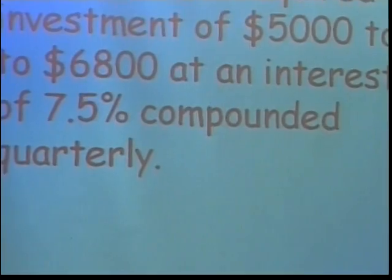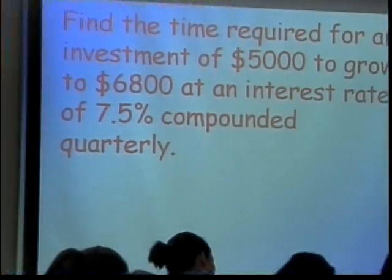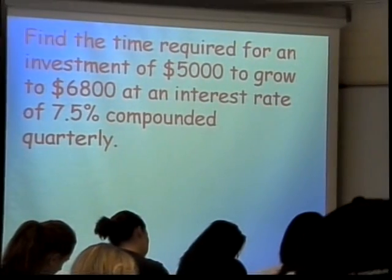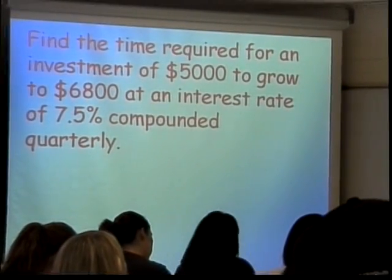Here is an example of growth. Find the time required for an investment of $5,000 to grow to $6,800 at an interest rate of 7.5% compounded quarterly. That's growth.